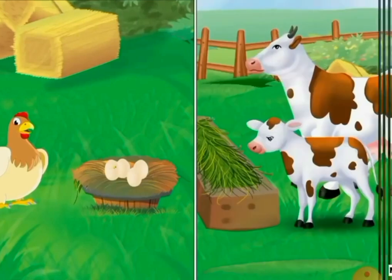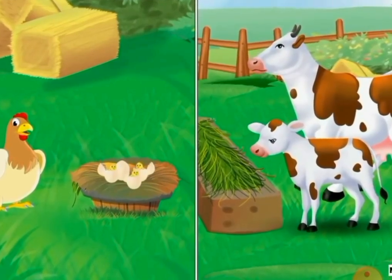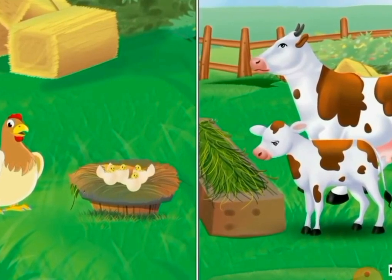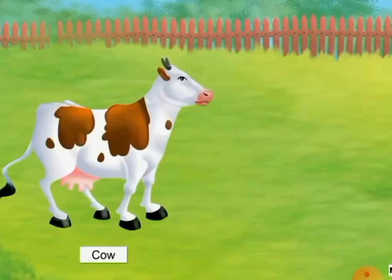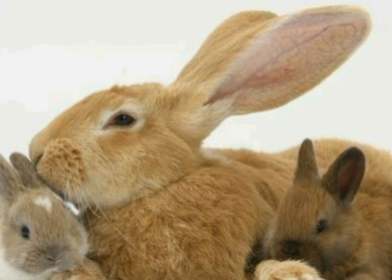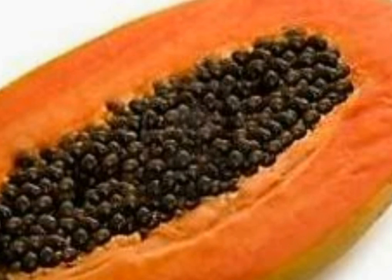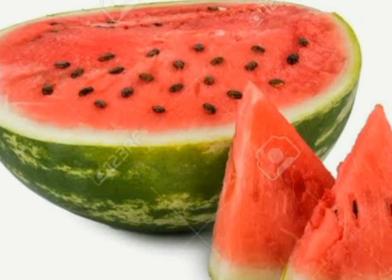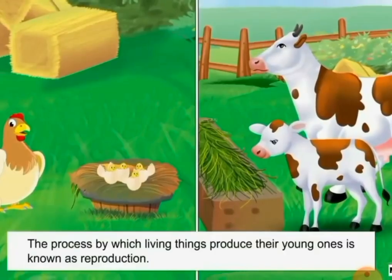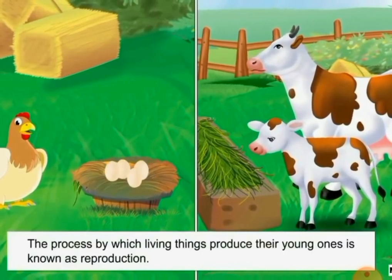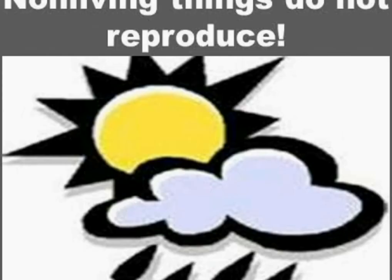All living things produce young ones of their own kind. Animals can produce young ones either by laying eggs or by giving birth. For example, a hen lays eggs while a cow gives birth to a calf, and a female rabbit gives birth to a baby rabbit. Most plants produce fruits with seeds, and a new plant grows from a seed. The process by which living things produce young ones is known as reproduction. Non-living things cannot reproduce.